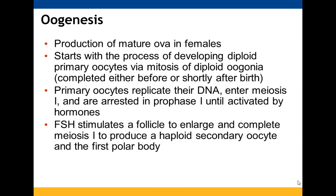Oogenesis is a little bit different, though it does produce the germ cell for females. The diploid primary oocytes are first made through diploid oogonia going through mitosis either before the female is born or shortly after, so there is a finite number of diploid primary oocytes present. The primary oocytes replicate their DNA and start meiosis I, then stop at prophase I until hormones cause them to be activated, at which point they will go through their ovarian cycle.